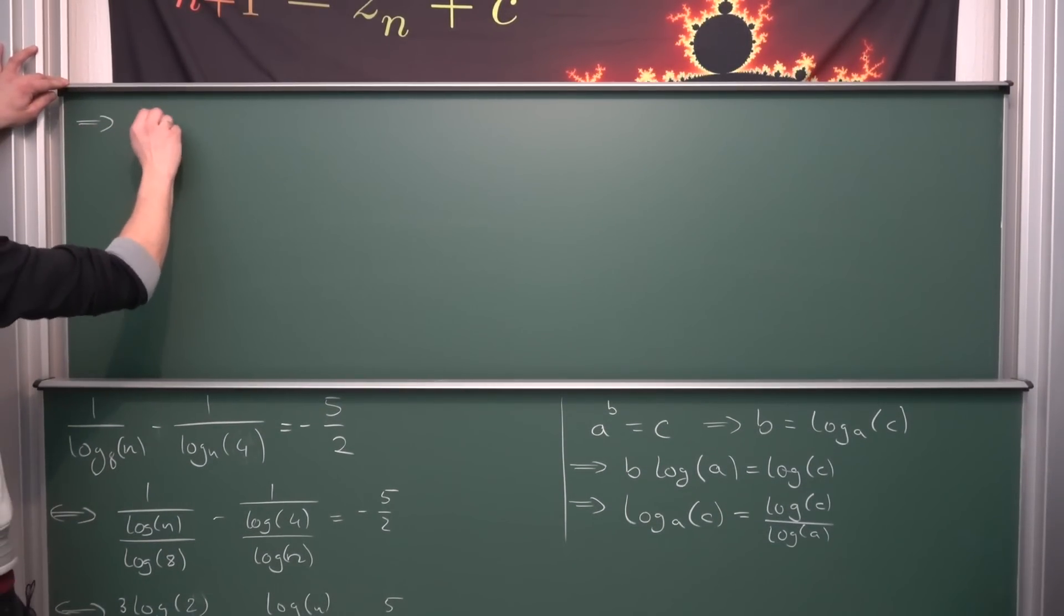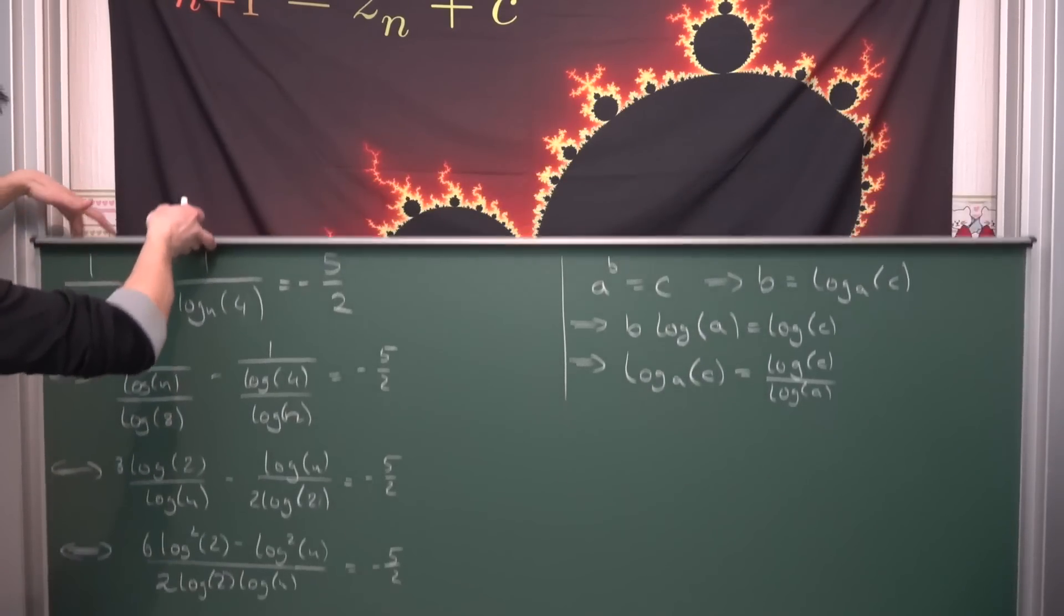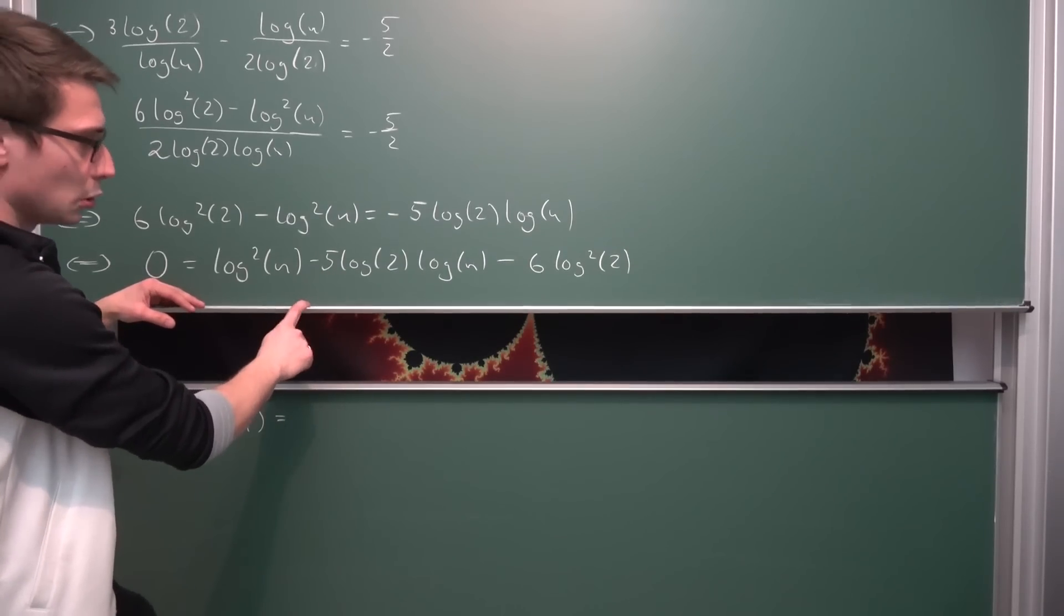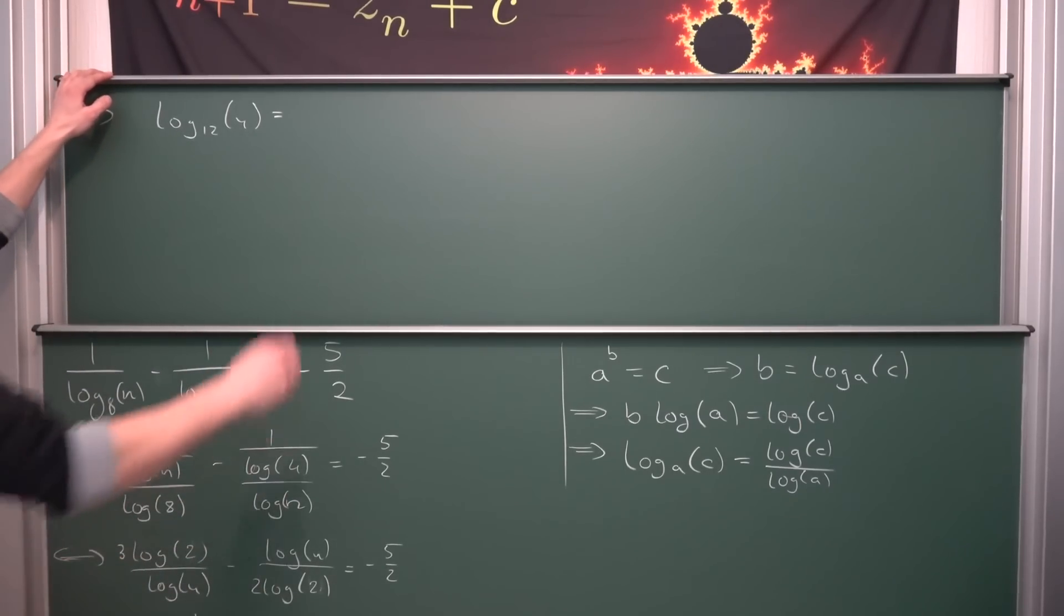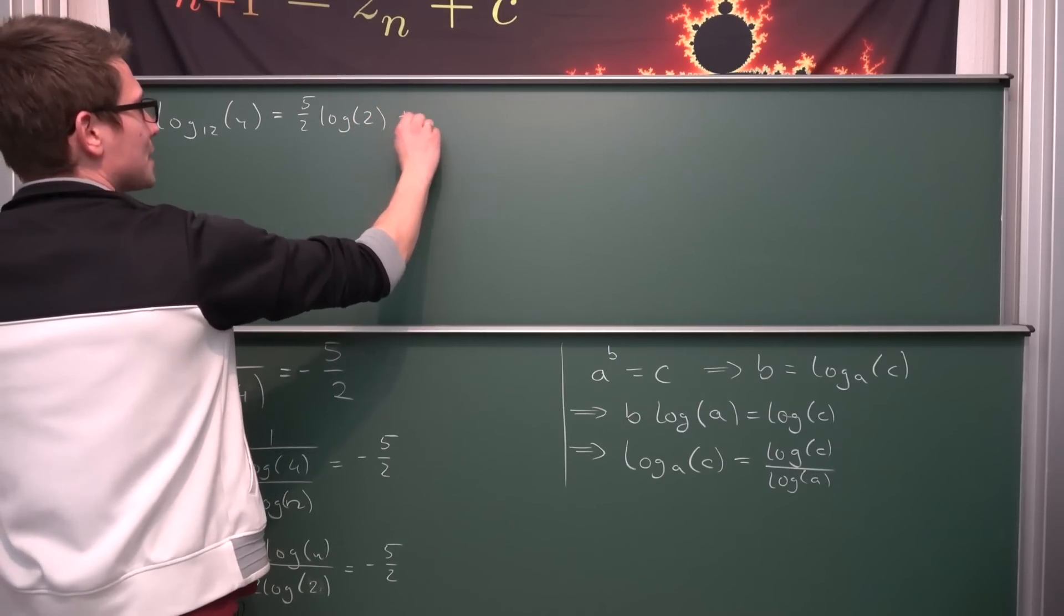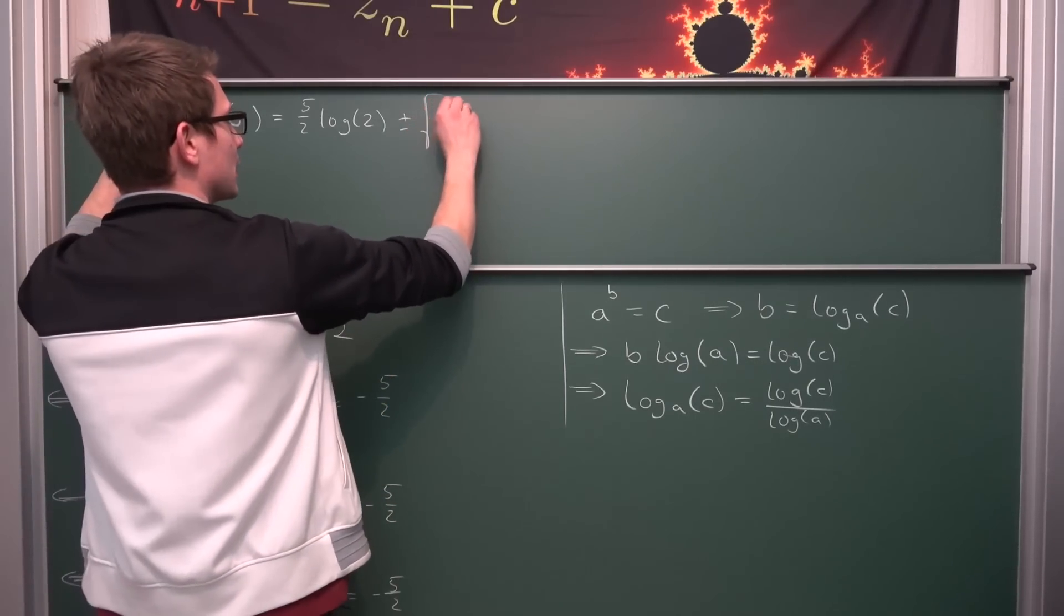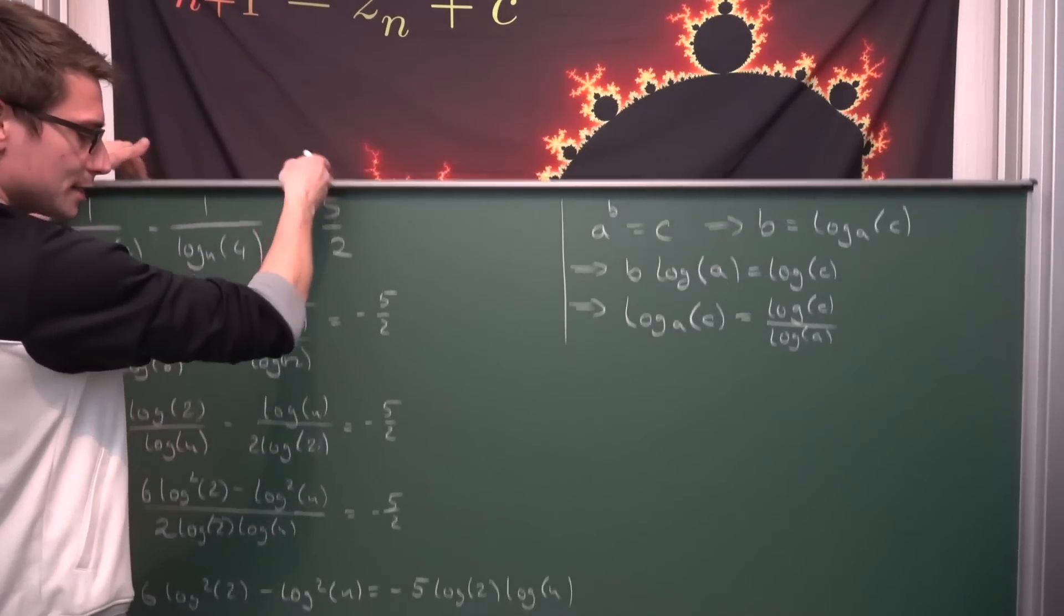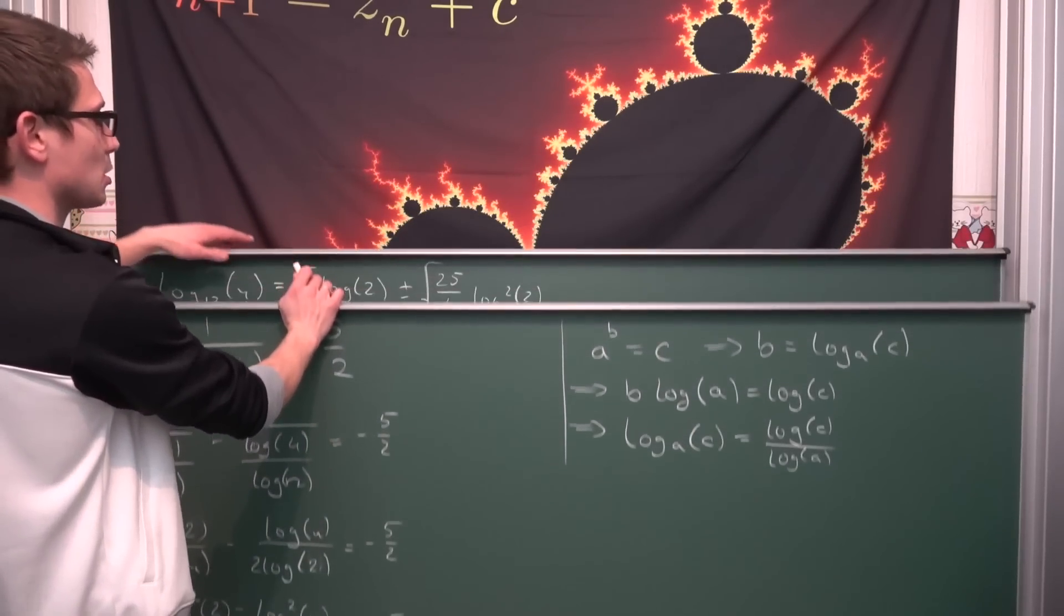With these two solutions being log of n being equal to 5 over 2 times log of 2 plus or minus the square root. Next we are going to take this part and we are going to square it, giving us 25 divided by 4 log squared of 2. And now negative and negative is going to become positive, so positive 6 times log squared of 2.